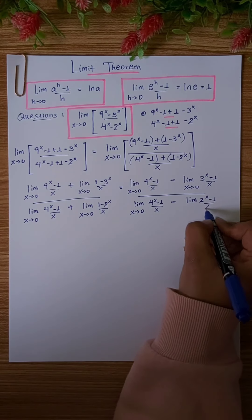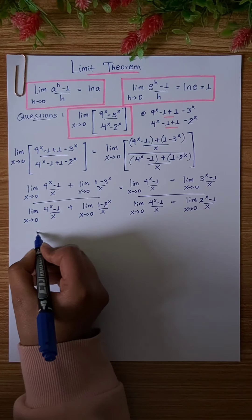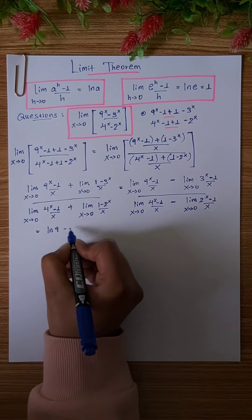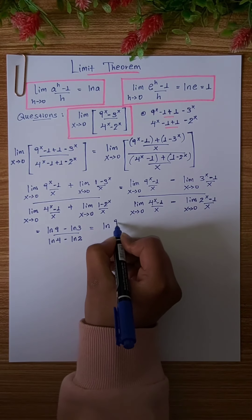Using the limit formula, we get ln 9 minus ln 3 over ln 4 minus ln 2.